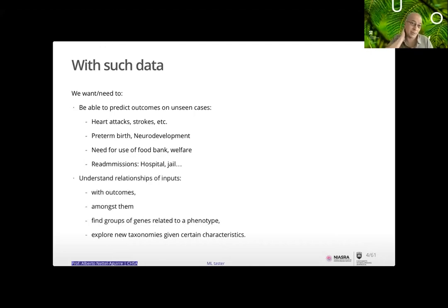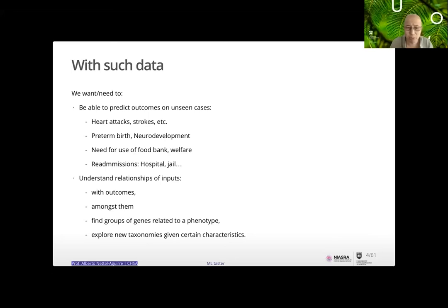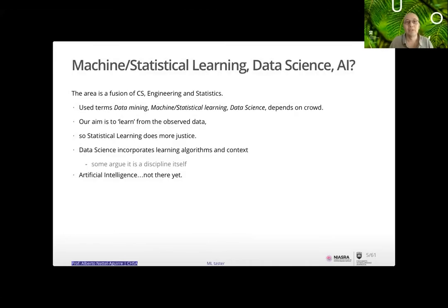The other part is relationships — sometimes we want to know: does this have anything to do with that? We need to be careful about whether we call them effects or just relationships. Are my inputs related to my outcomes? Are there groups of genes related to a phenotype? Can we create some kind of taxonomy given that things are more alike than others?